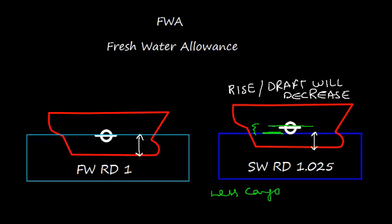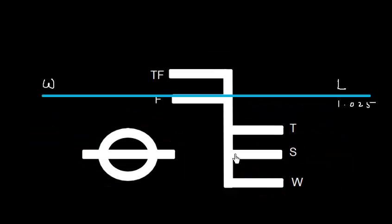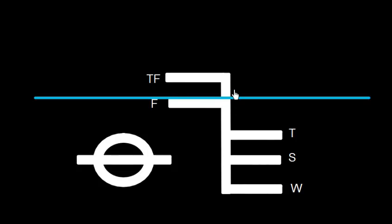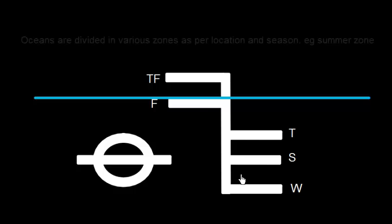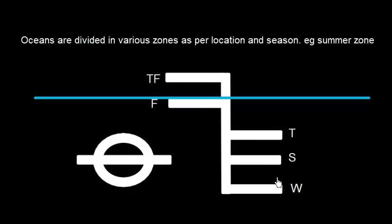To avoid this situation, we can submerge this load line mark in fresh water by some amount, so that when the ship goes into salt water, she will rise up to the correct load line. Now let us look at the typical load line marks seen on the starboard side. This is the S mark, or summer load line — the line marked with S, in line with the center of the disk. It denotes the depth to which a ship can be loaded when floating in salt water in the summer zone.